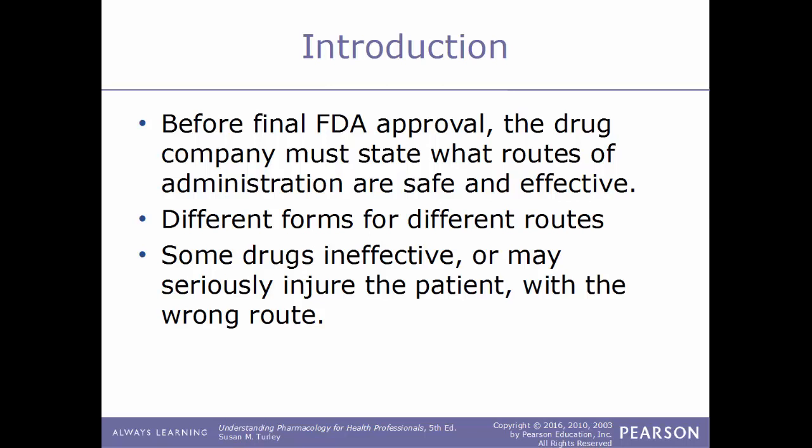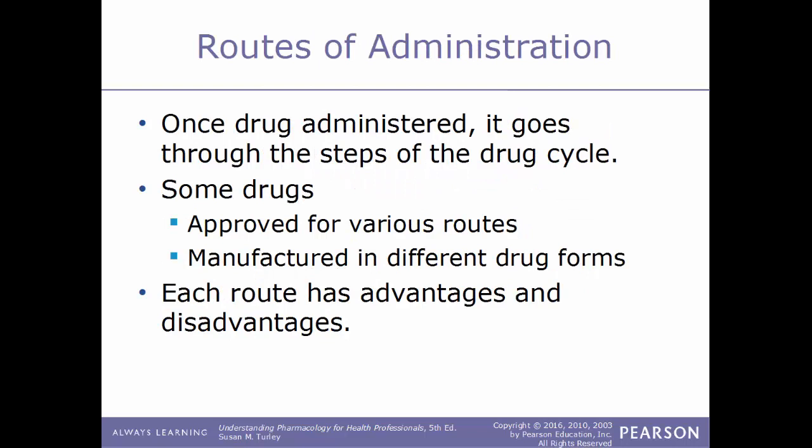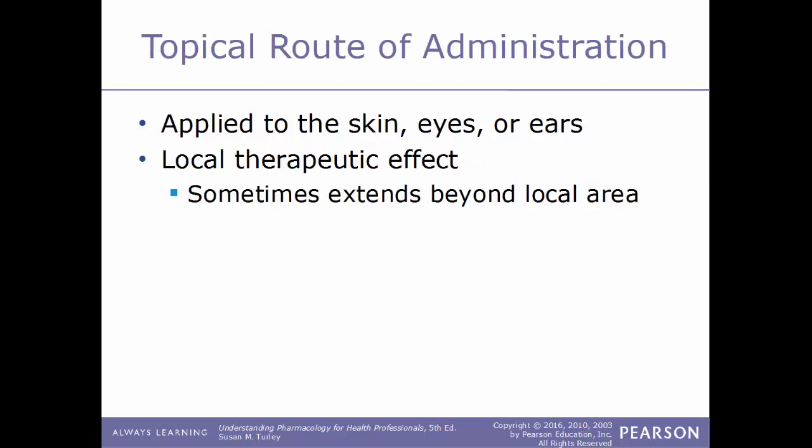Before final FDA approval, the drug company must state what routes of administration are the most effective and the safest for their drug, and there may be different forms of the drug used for different routes of administration. Some drugs are ineffective or may seriously injure the patient if given through the wrong route. Once a drug is administered it goes through the steps of the drug cycle. Every route of administration has advantages and disadvantages.